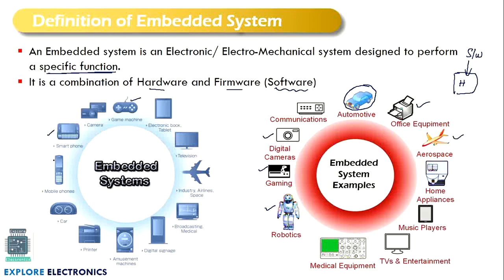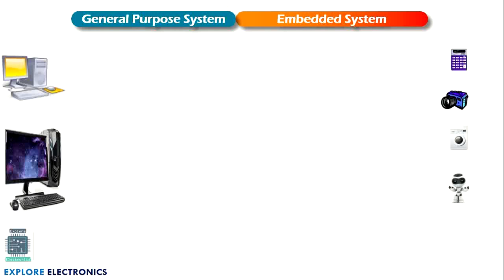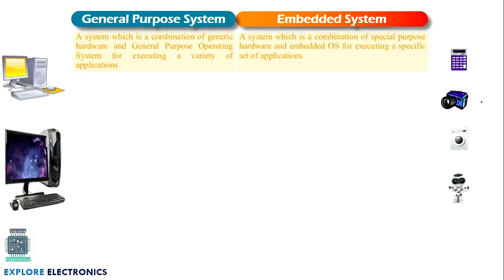Let us see the difference between what is an embedded system and a general purpose system. A general purpose system is basically the computer we use. A general purpose system is a combination of generic hardware and a general purpose operating system for executing a variety of applications — it will have a general purpose operating system and it will be used to execute a variety of applications.